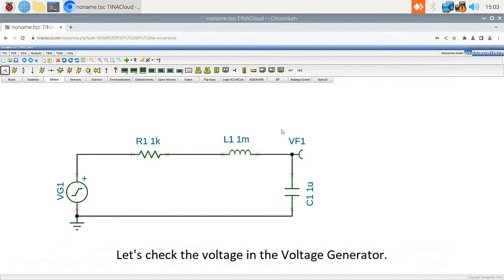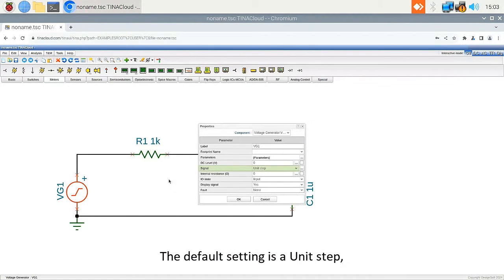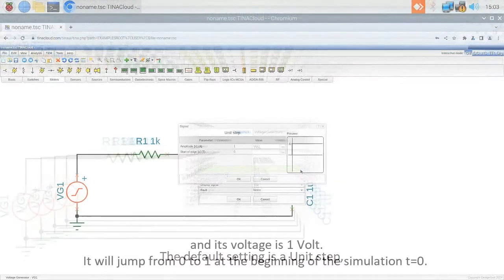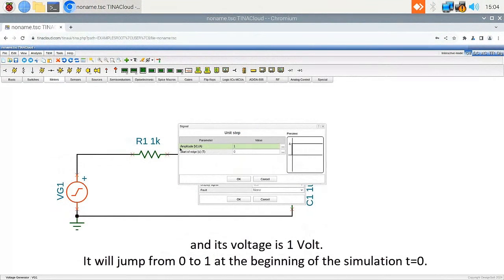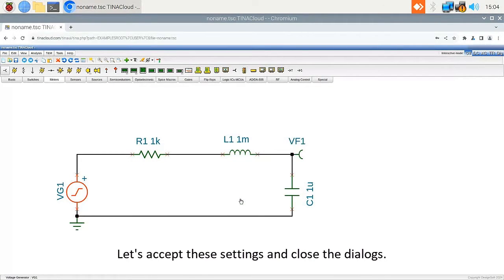Let's check the voltage in the voltage generator. Double-click on the voltage generator. The default setting is a unit step. And its voltage is 1 volt. It will jump from 0 to 1 at the beginning of the simulation, T equals 0. Let's accept these settings and close the dialogs.